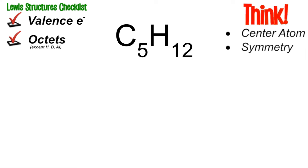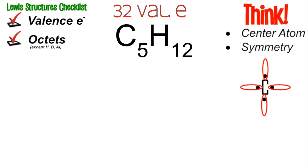Always think about two important ideas: you're always trying to identify a center atom and you're always trying to think about symmetry. Looking at a periodic table, carbon is in the 14th group so it has four valence electrons and hydrogen has one. So five times four plus one times twelve gives you 32 valence electrons. Carbon bonds four times and hydrogen only bonds once, so carbon is the center atom.